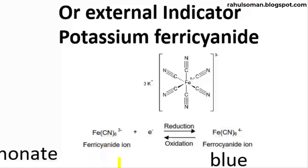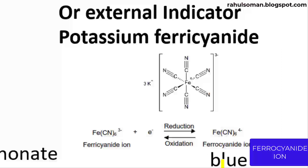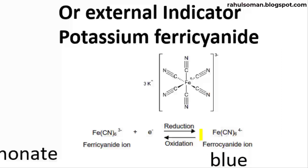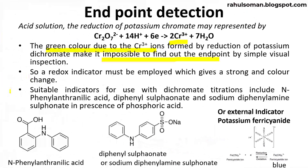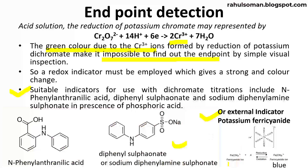Potassium ferricyanide acts as an external indicator: the ferricyanide ion converts to its ferrocyanide form at the end point, and the ferrocyanide form produces an intense blue color. These are the different end point detection techniques in dichromatry — one using an internal indicator (N-phenyl anthranilic acid or diphenylamine sulfonate/sodium diphenylamine sulfonate) and another using an external indicator (potassium ferricyanide), which converts to ferrocyanide giving an intense blue color.